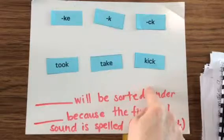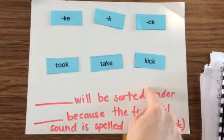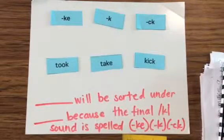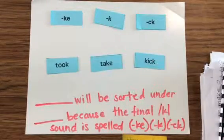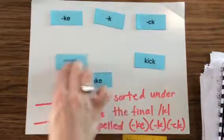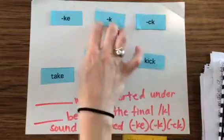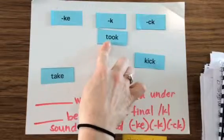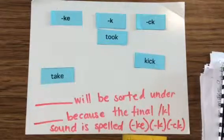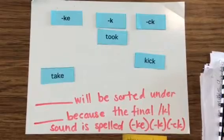All three of these words have a k at the end, and it's our job to know how the k sound is spelled. So we have the word took. What's the word? Took. Took would be sorted under just k because the ending sound k is spelled k.